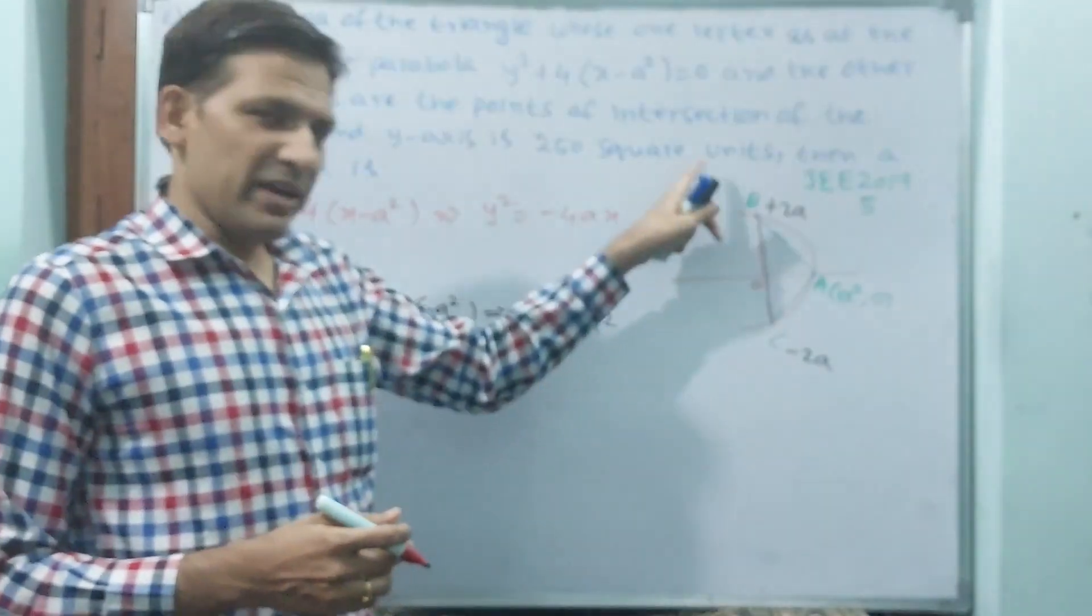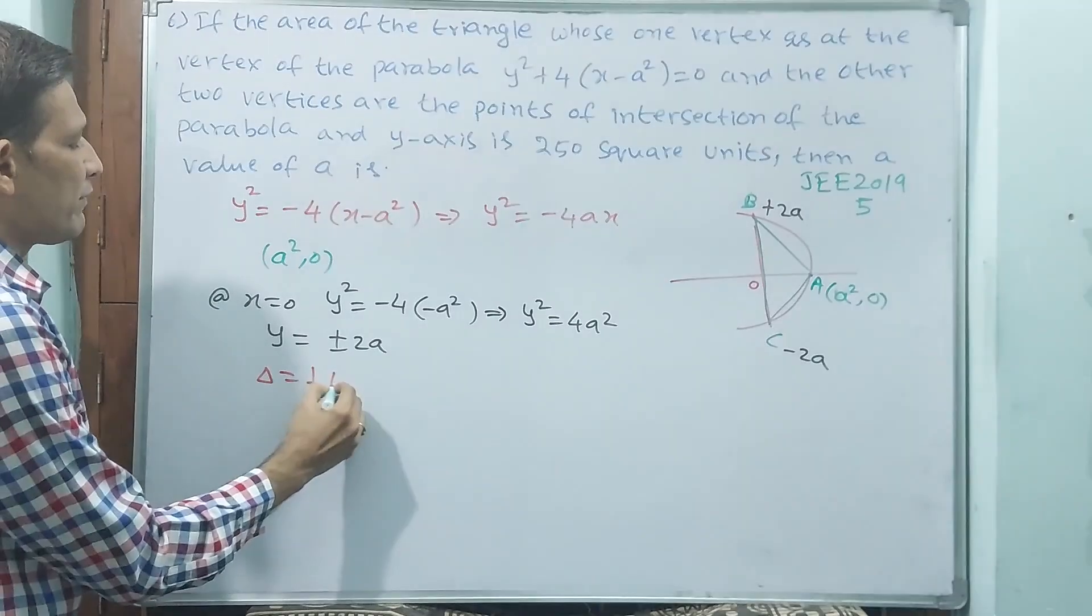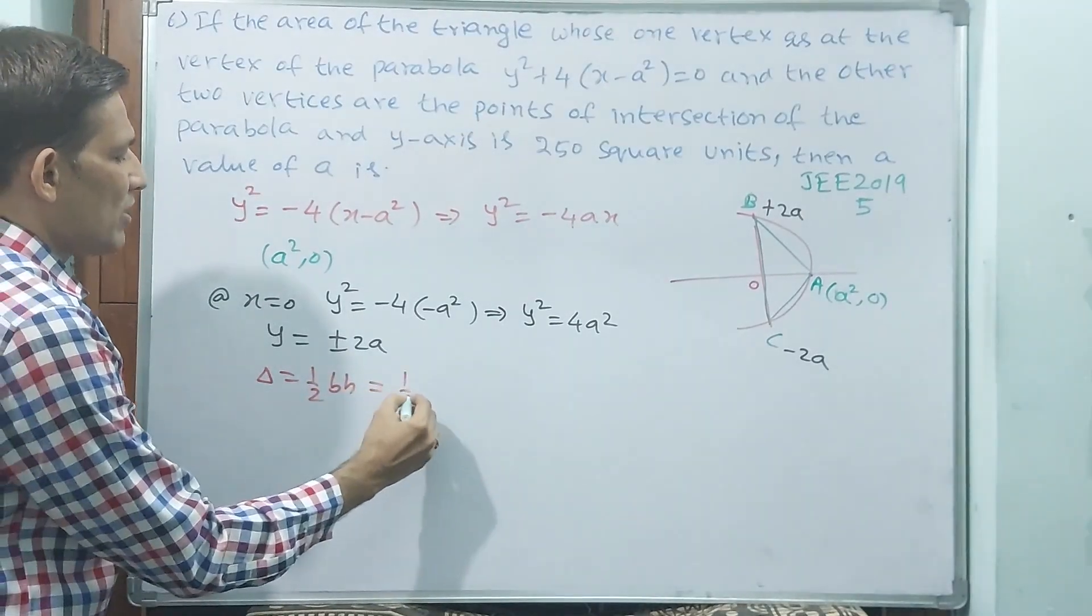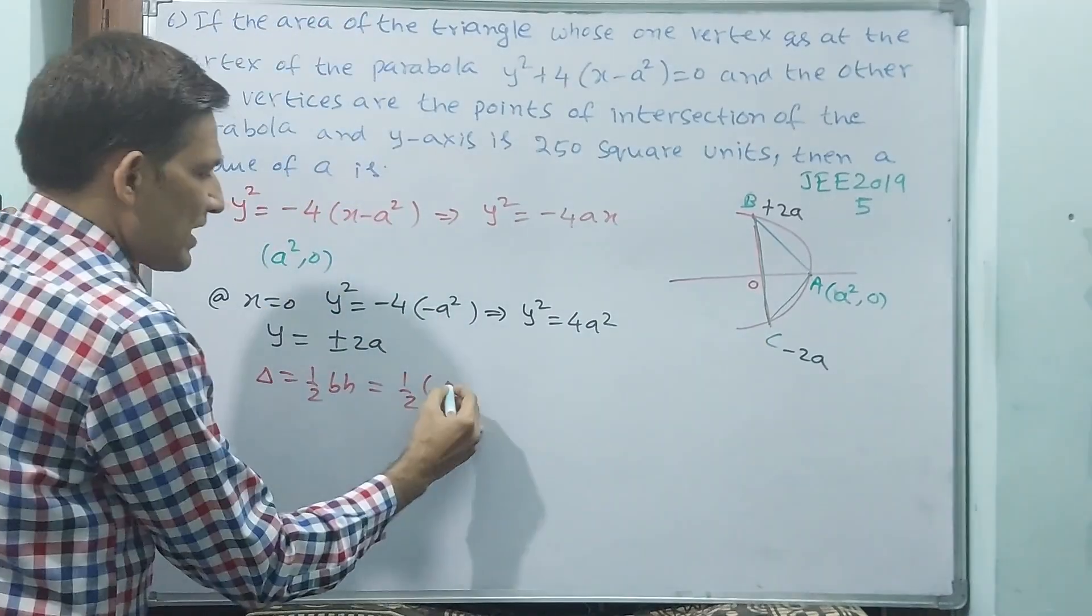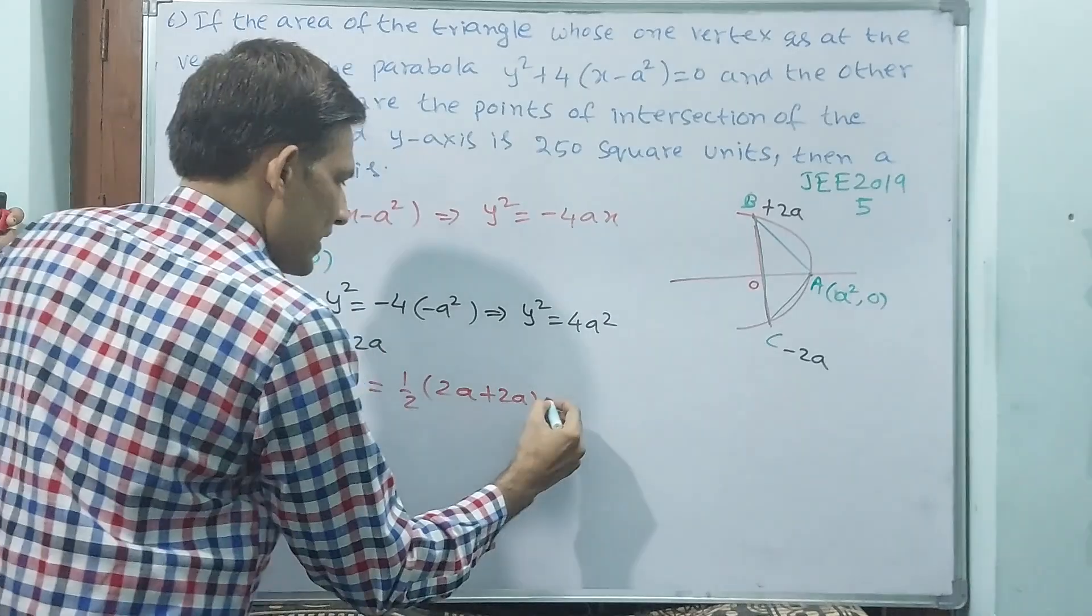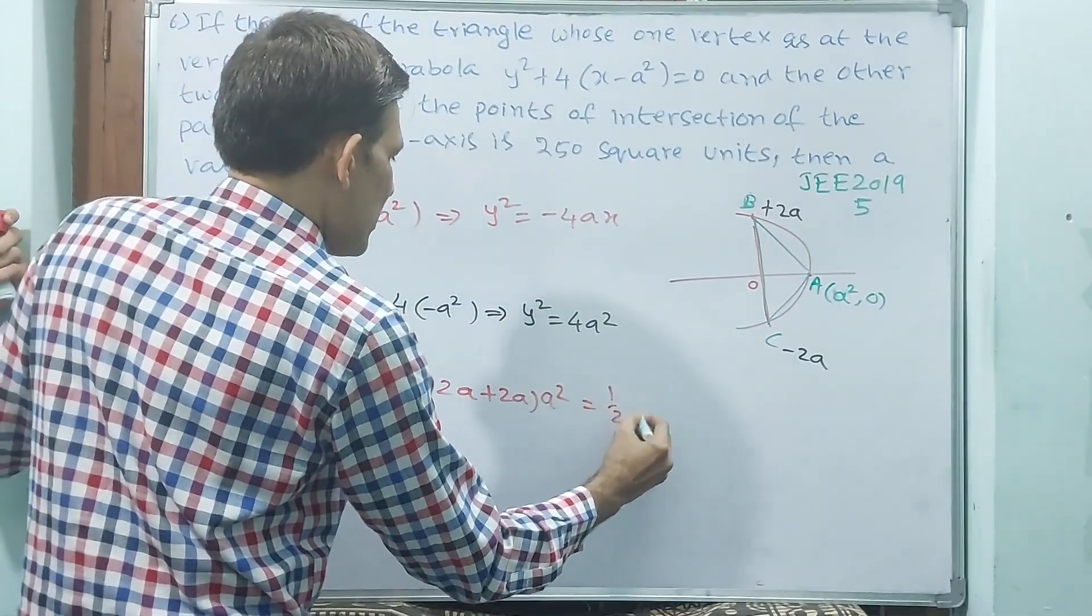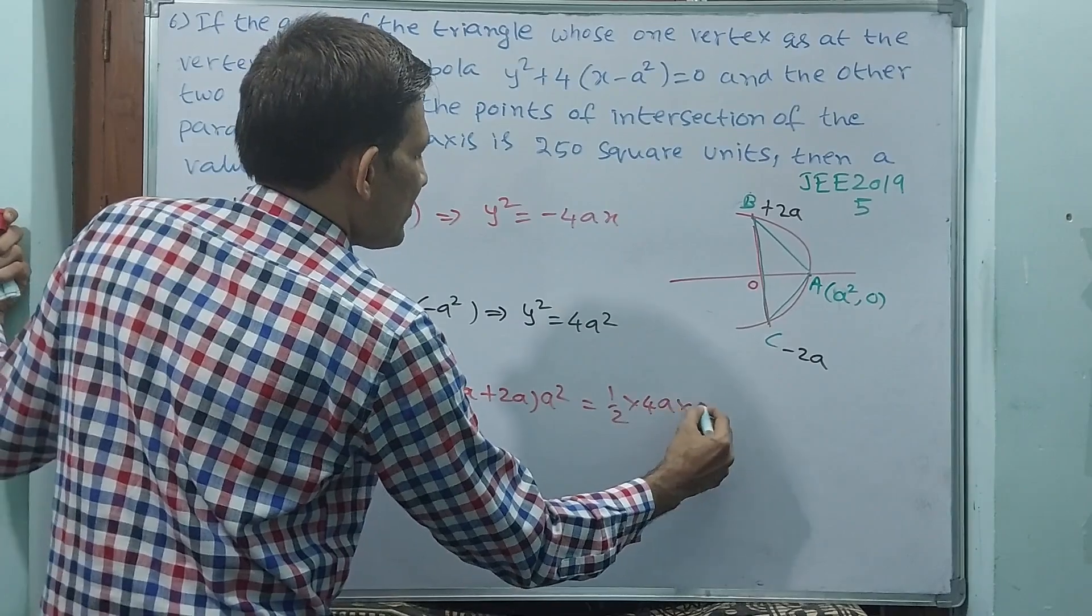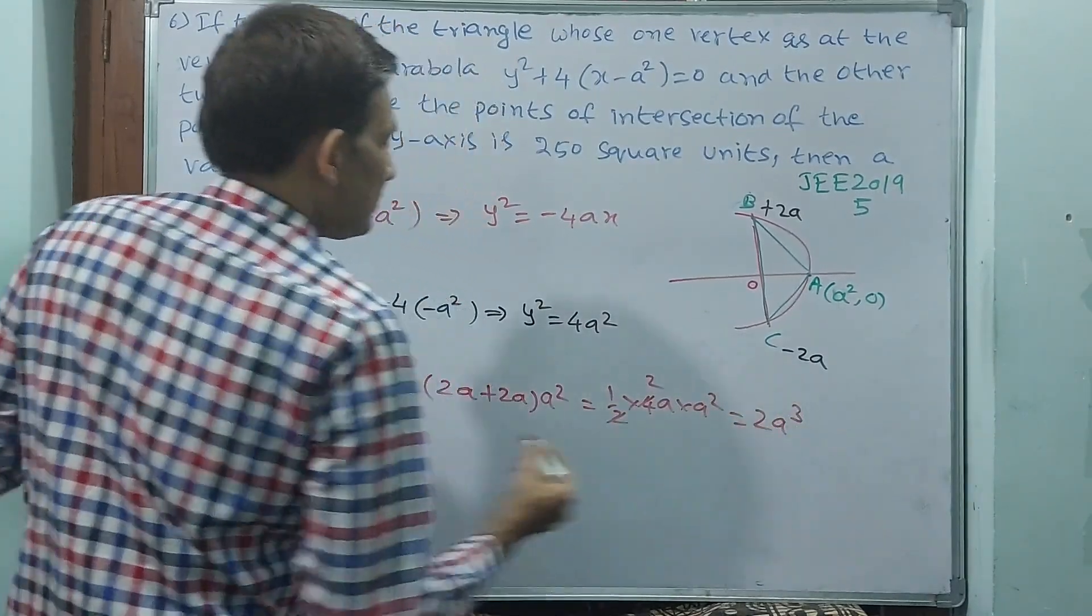Now, you tell me, what is the base? Delta is equal to half base height, that is equal to half. Base will be 2 a minus off minus 2 a, plus 2 a, a square height. That is equal to 1 by 2 is equal to 4 a is equal to a square. 2 a cube.